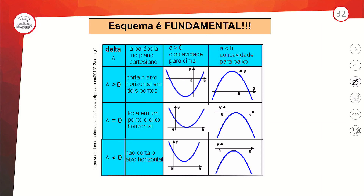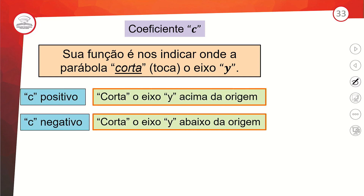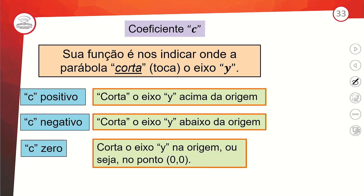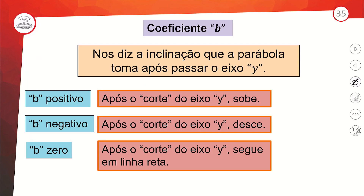O coeficiente C é o ponto que corta o eixo Y — chamado também de intercepto. C positivo quando corta acima da origem, C negativo quando corta abaixo, C zero quando passa pela origem. Na função do primeiro grau era o B que cortava o eixo Y; aqui na quadrática é o C. Agora vamos falar do B, já que falamos do A e do C.